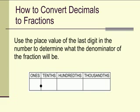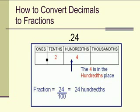How to convert decimals to fractions? Well we use the place value of the last digit in the number to determine what the denominator of the fraction will be. For instance, if we have the number 0.24, so if this is our decimal, 24 hundredths. Well our 4 is in the hundredths place value, so that means that the denominator is 100. So you put 24 over 100 because it is in the hundredths place value.